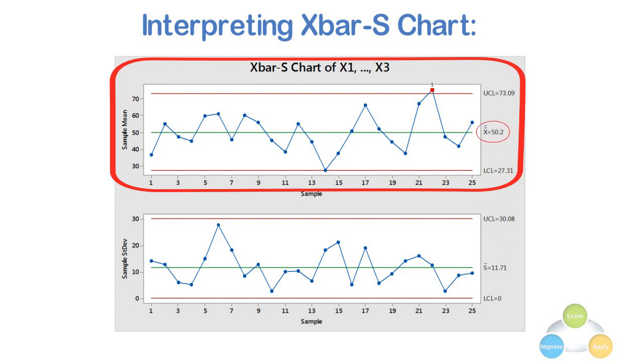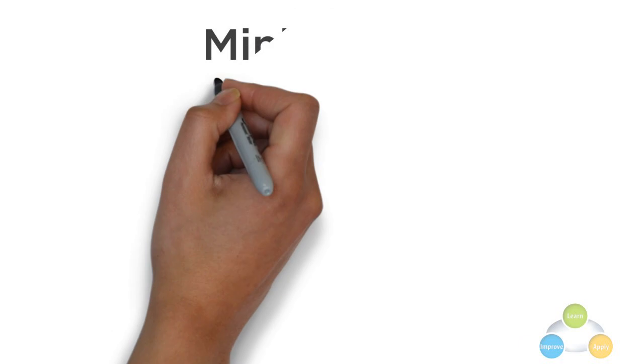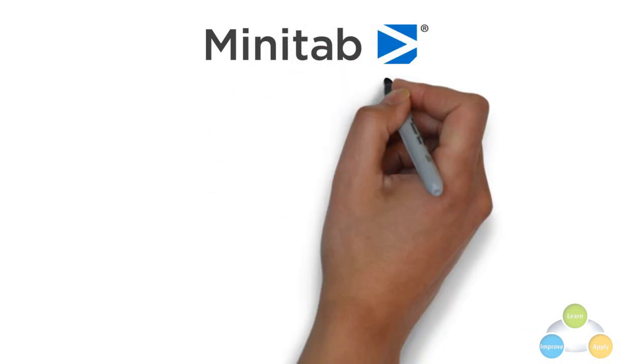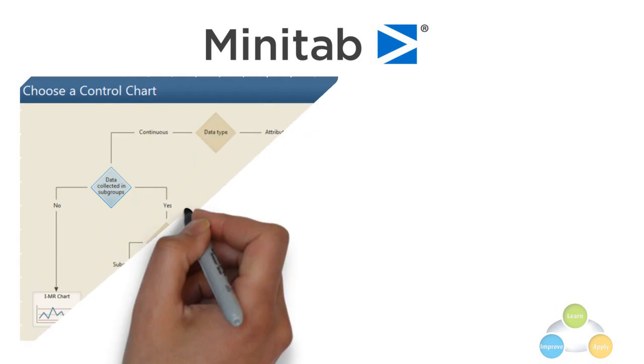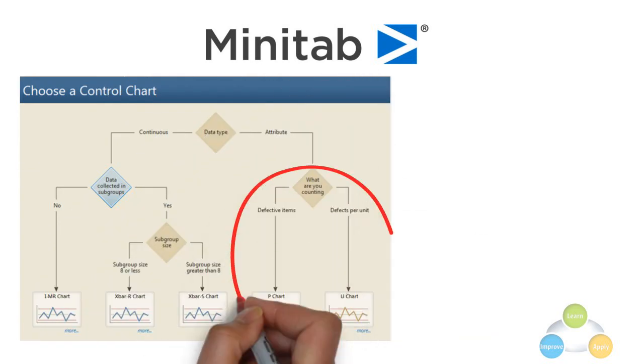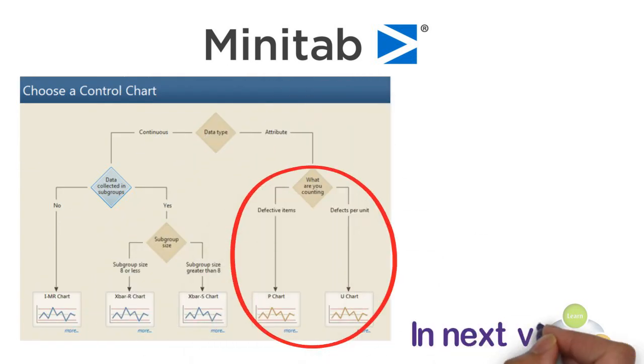This is all about X bar R chart and X bar S chart. With these charts, we have learned control charts for the variable data. If you have to learn control chart and its analysis, Minitab software is really one of the things you must have. I will explain the control charts for attribute data with examples in the next video.